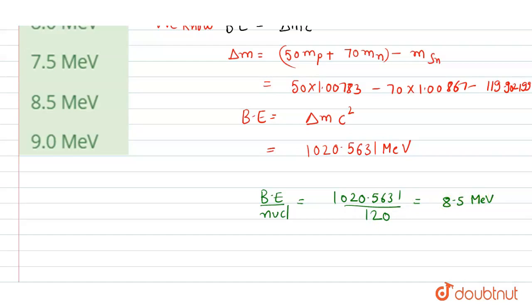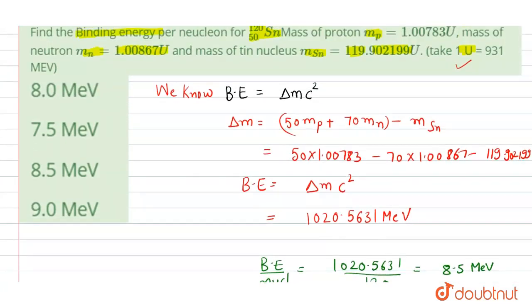So the value will become 8.5 mega electron volt. Hence option C is right. Thank you.